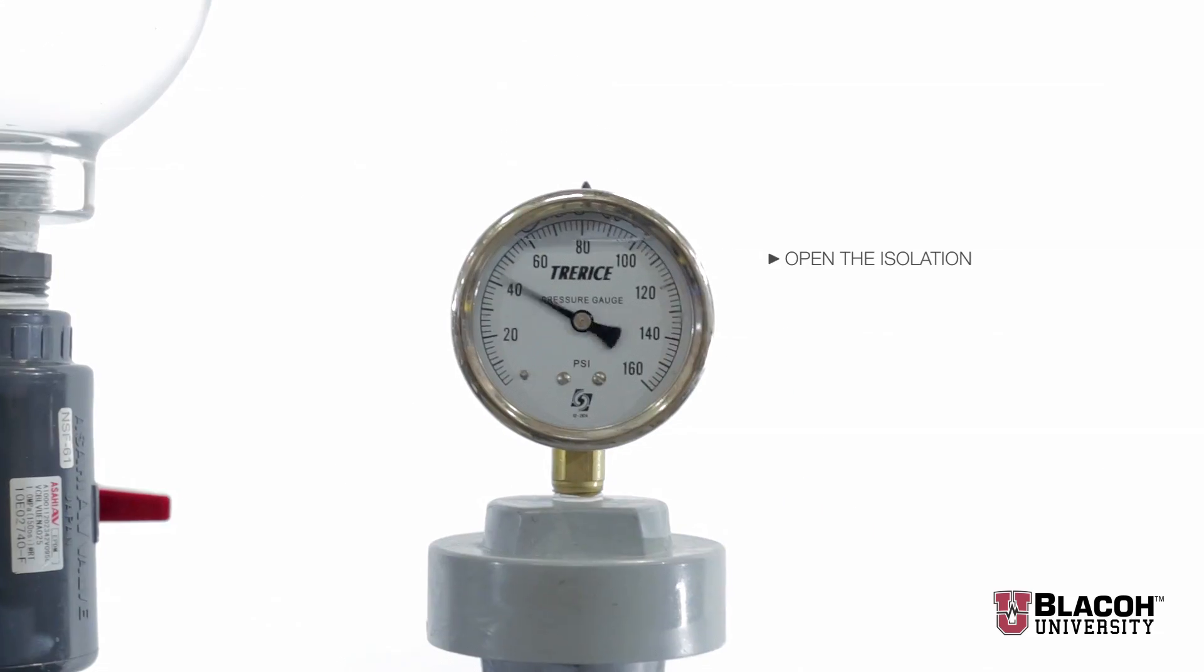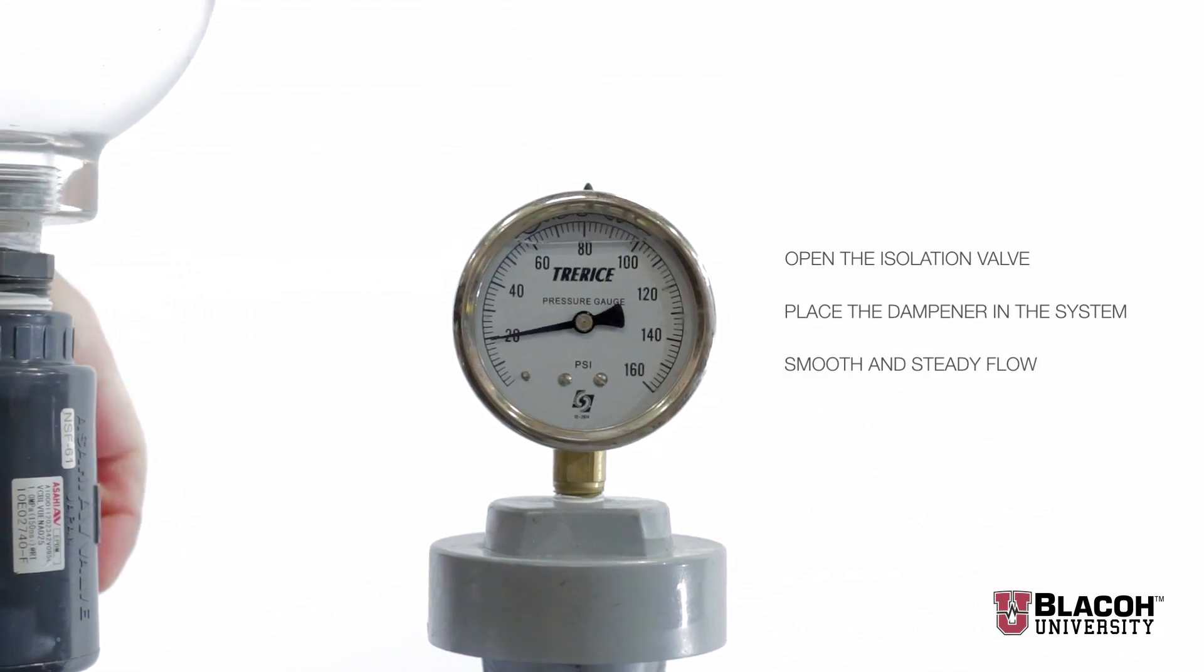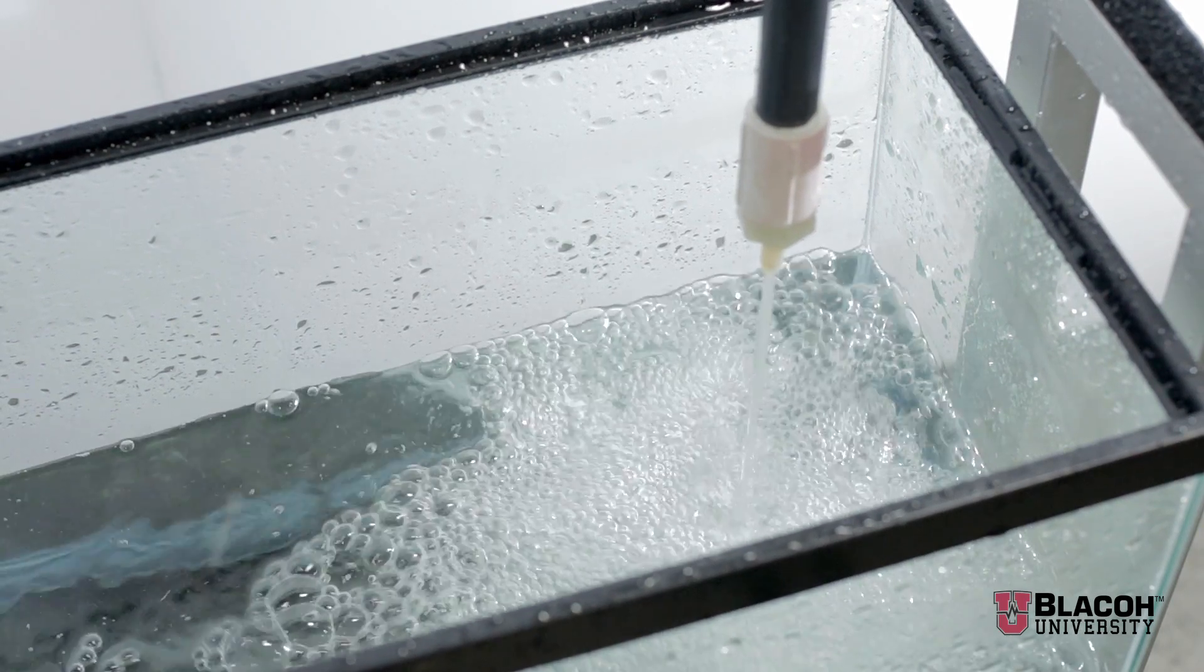As we open the isolation valve and place the dampener in the system, we see a smooth flow. We can see the gauge is now at 20 psi.